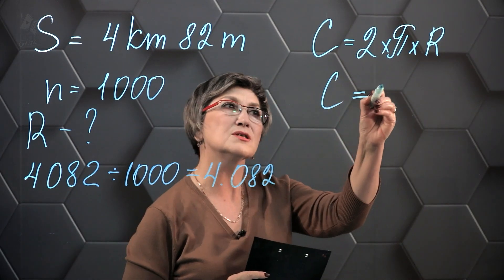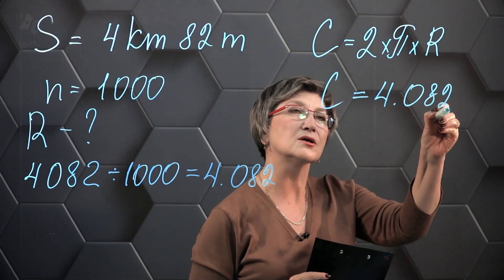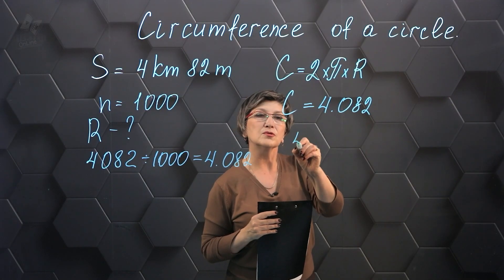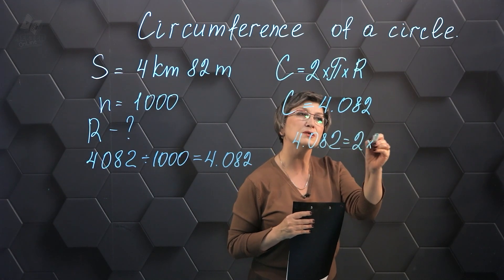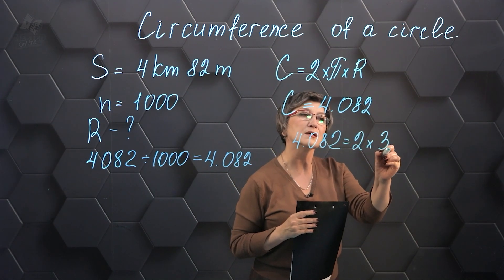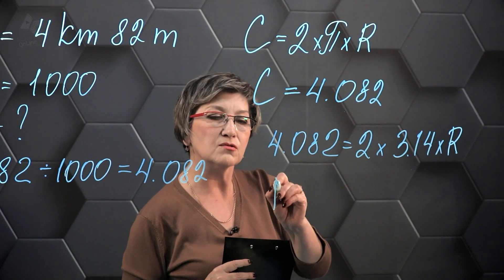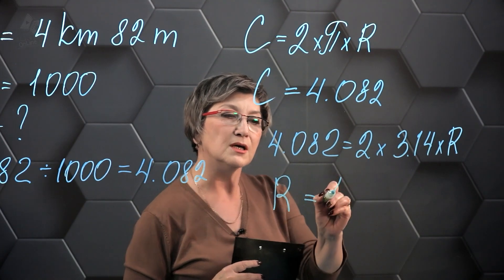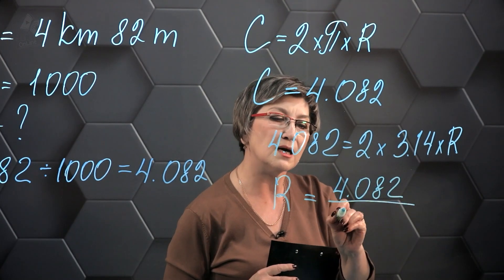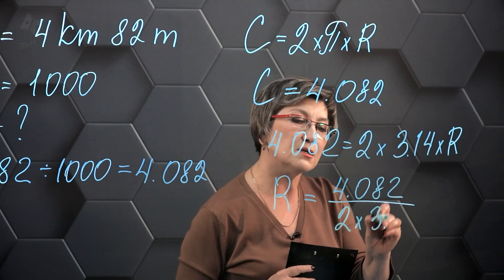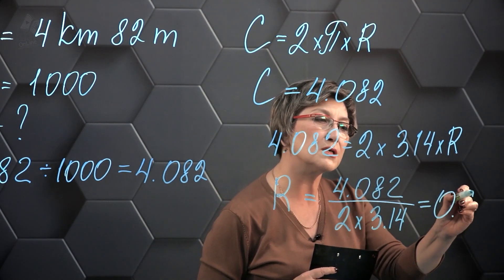Let's write down that the length of the circle is 4.082. Substituting into our formula: 4.082 equals 2 multiplied by 3.14 and multiplied by the radius. As a result, in order to find the radius we must divide 4.082 by 2 times 3.14 and the result is 0.65.